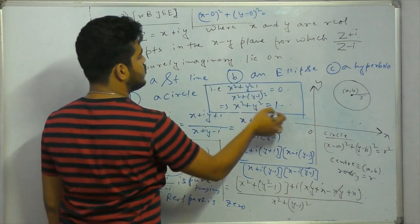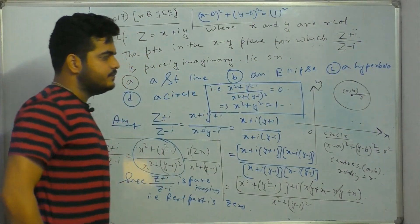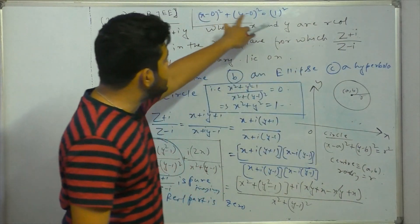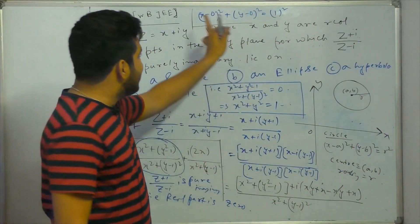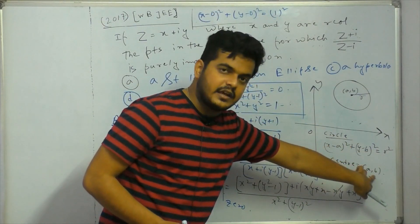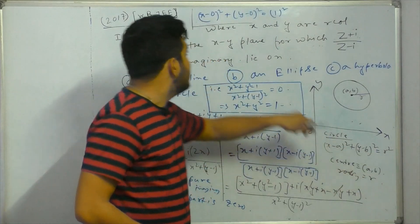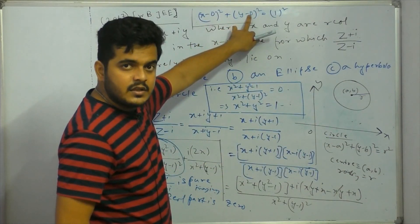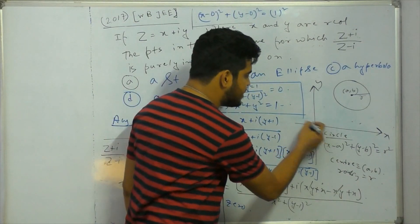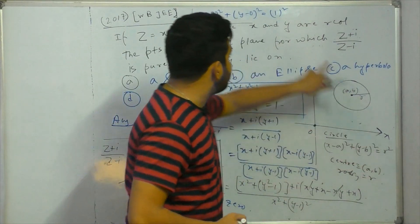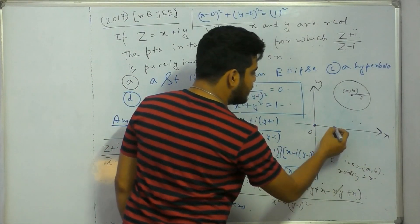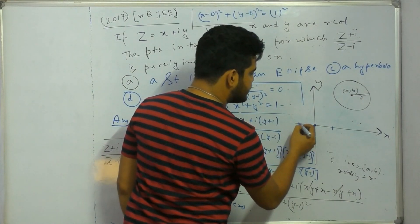y equals to one. So what does this equation mean? This equation is like centre 0, 0 and R is equal to 1. Which circle? This one has the centre at the origin and radius R equals 1. So the circle has radius 1.